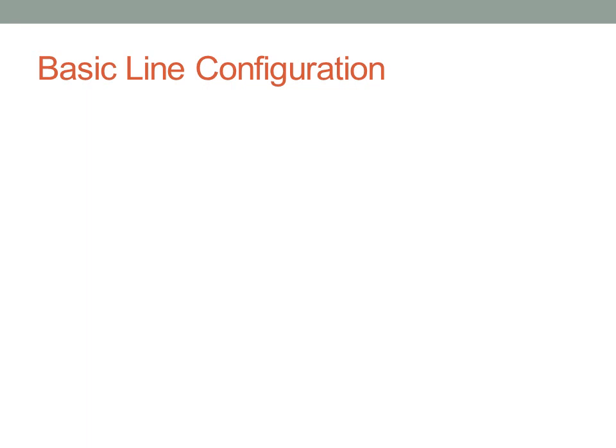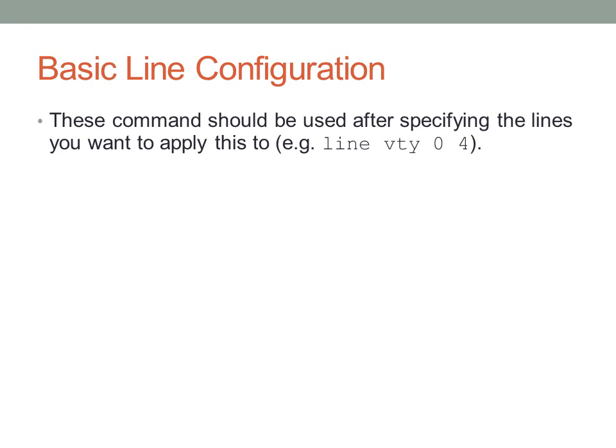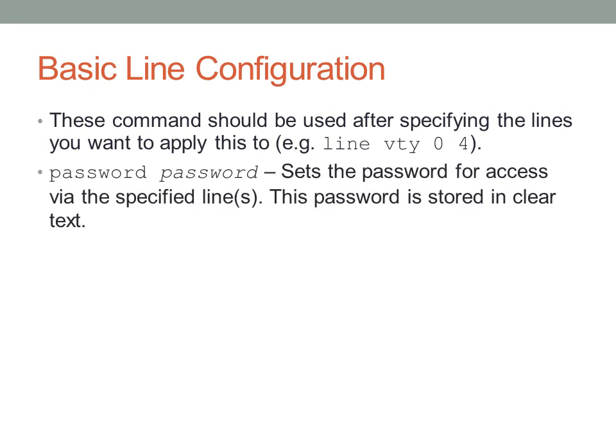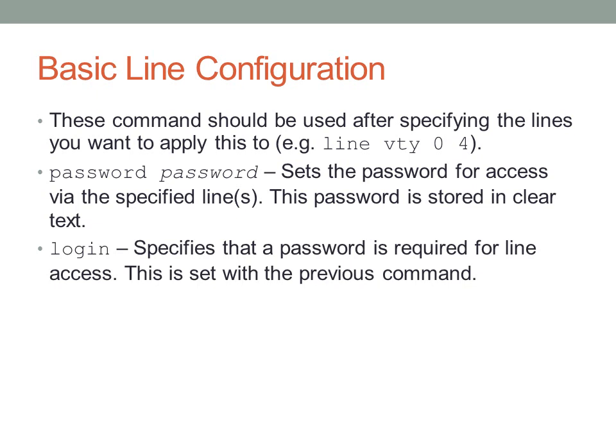To configure lines — the console and VTY virtual terminal lines — you specify which lines to apply configuration to. For example, 'line console 0' applies to the console terminal, and 'line VTY 0 4' applies to virtual terminal sessions 0 through 4 (the first five sessions) used for Telnet and SSH. Under these lines, you can configure a password required at login. The password is stored in clear text by default, with an optional but reversible encryption. You must also specify the 'login' command to actually prompt for that password.